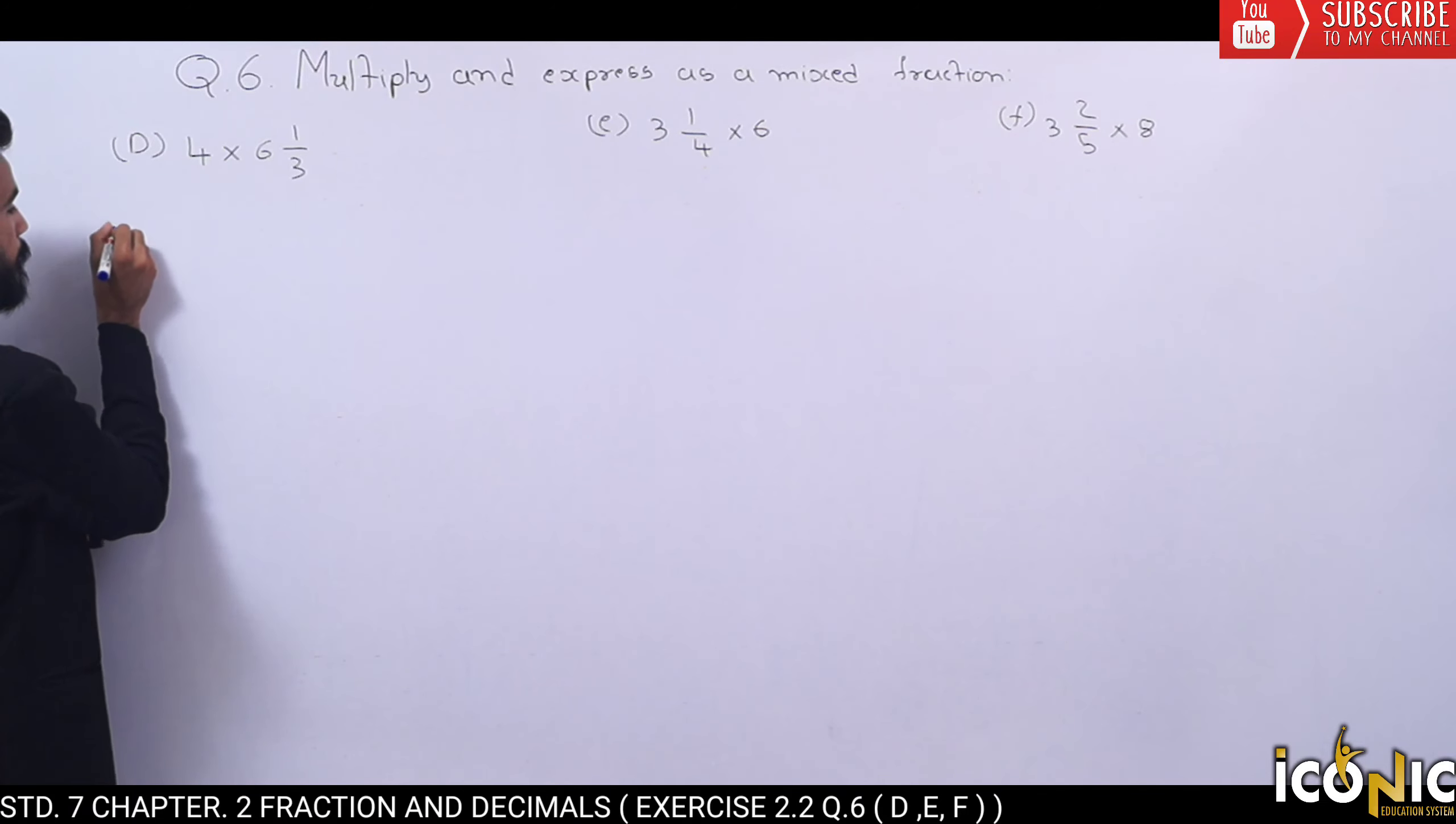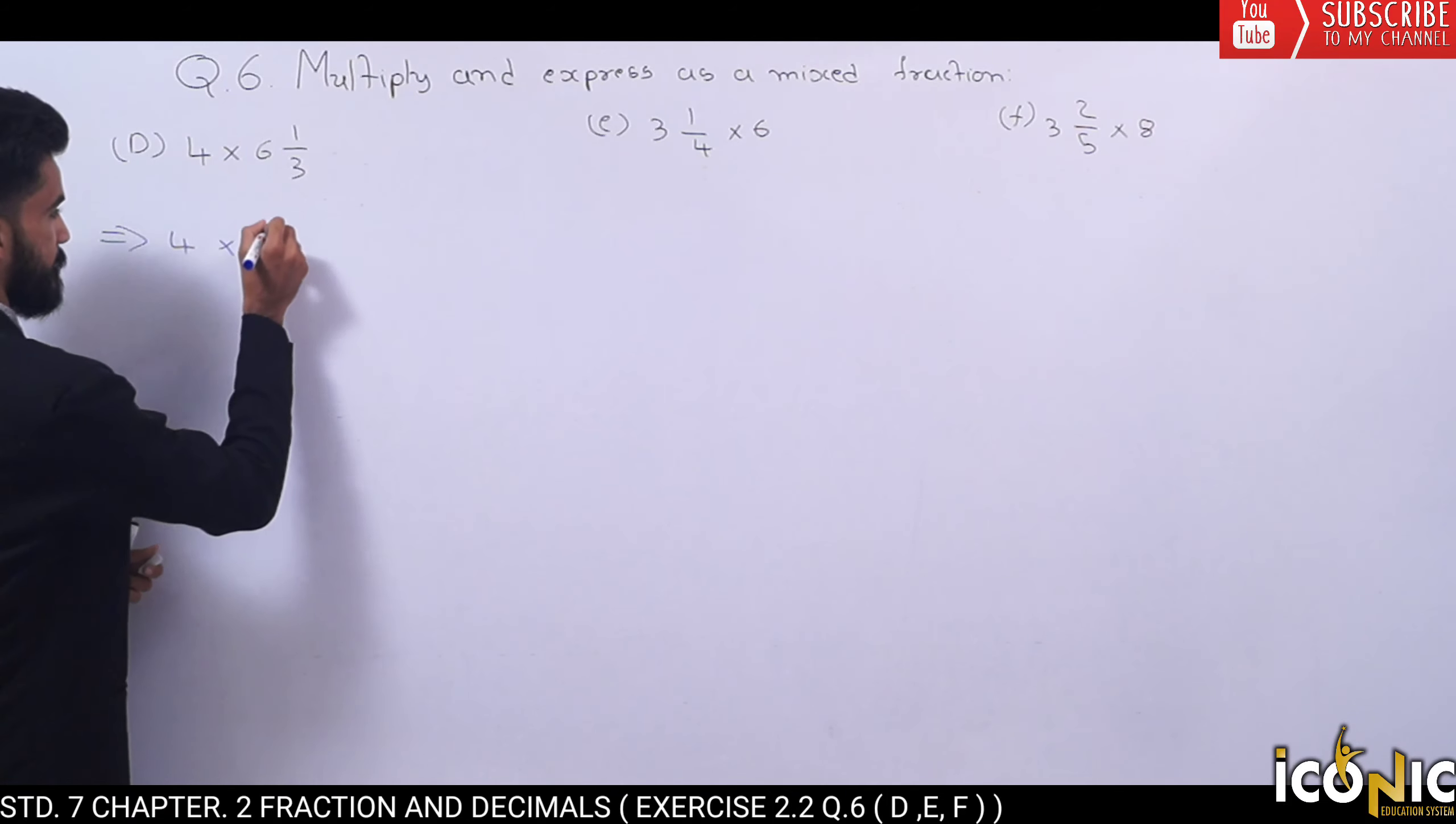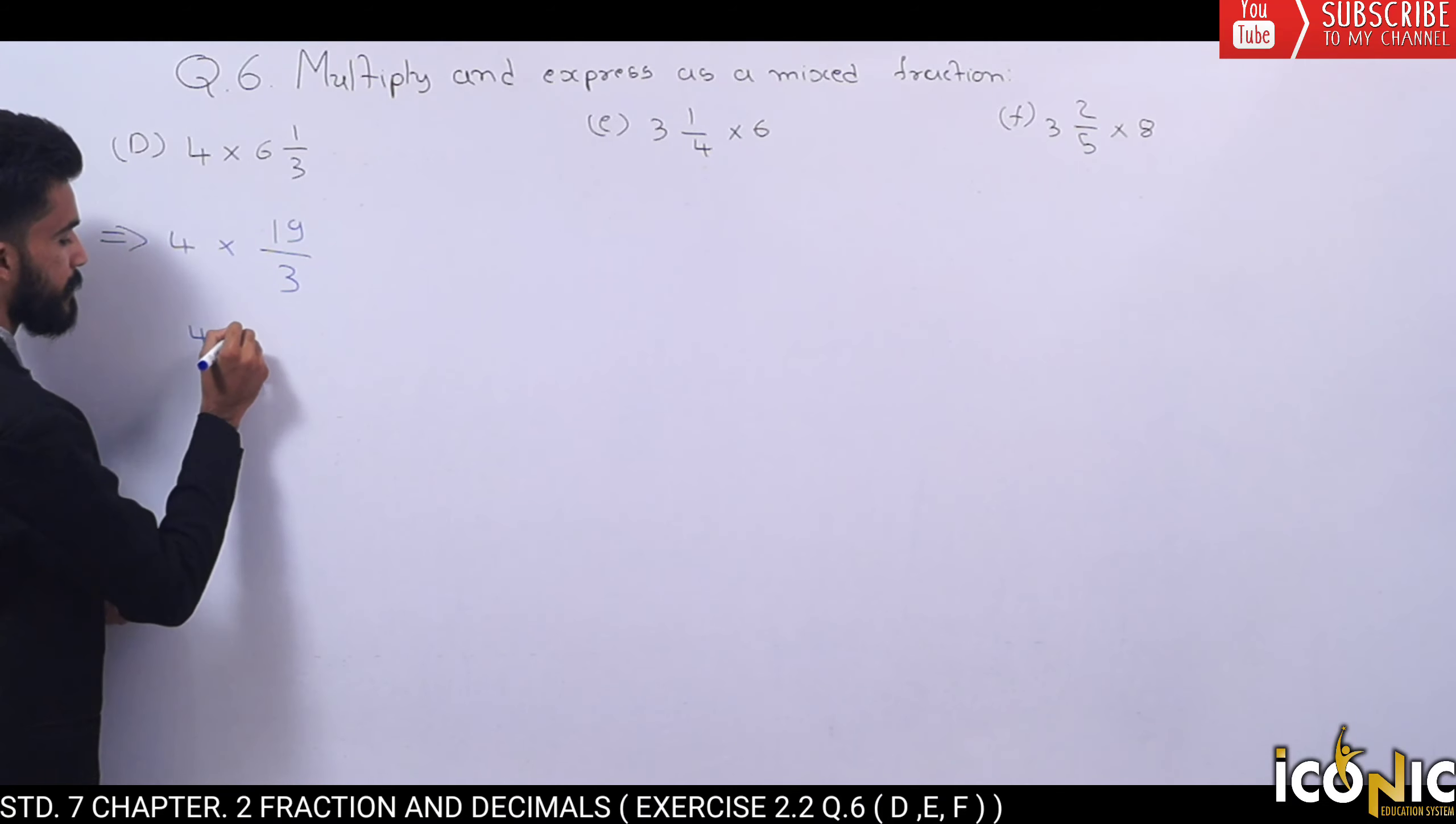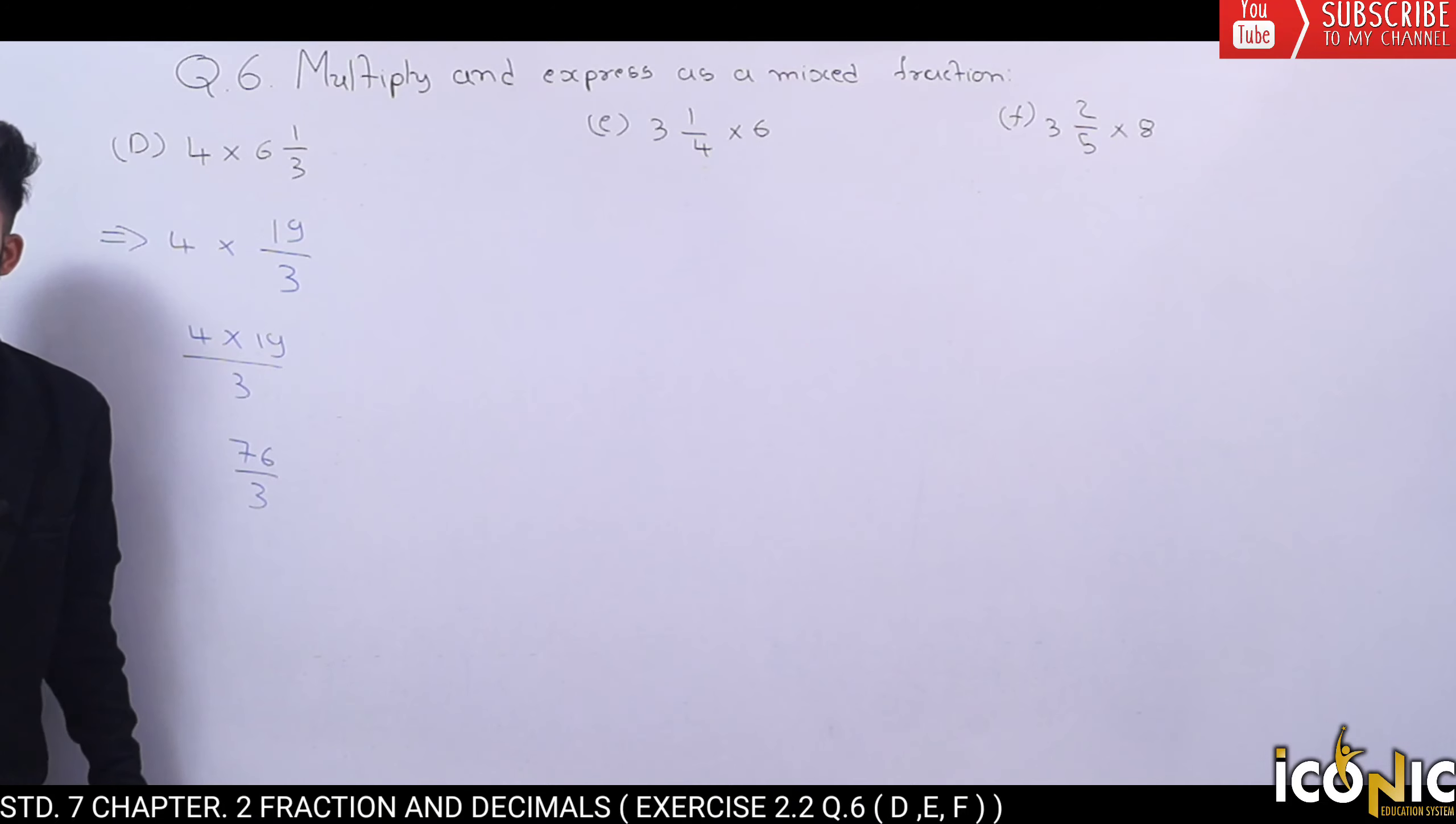Let's start example number D. First, we have to convert the mixed fraction to normal fraction. 6⅓ means 6 times 3 is 18 plus 1 equals 19, so it will be 19 upon 3. Then 19 multiply by 4. Let me write the full step. 19 times 4 is 76 upon 3.